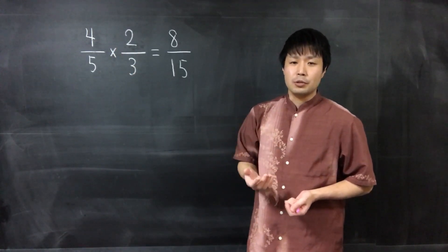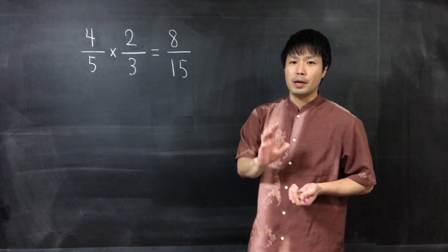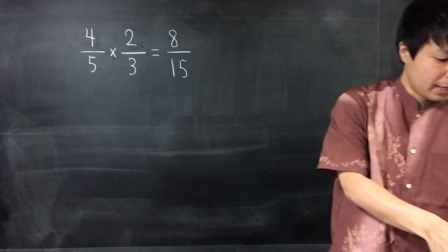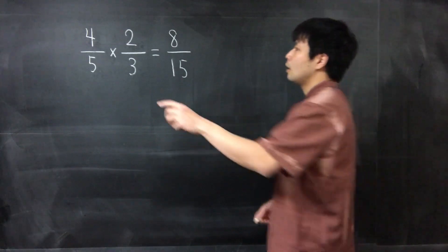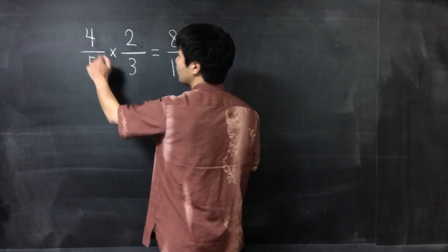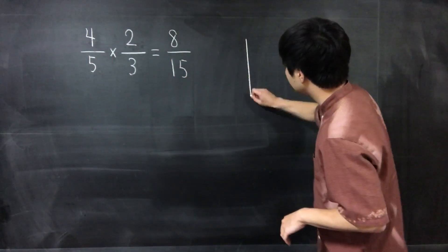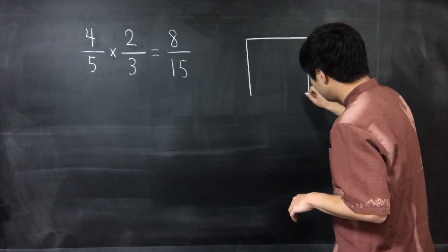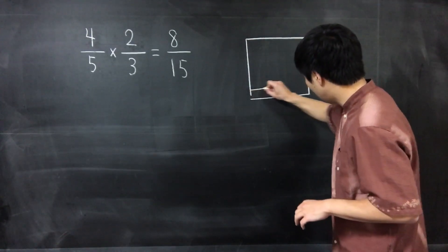Multiplying fractions means part of part. Okay, I will explain. 4 over 5 corresponds to the area of this.